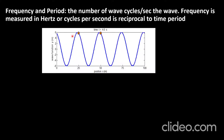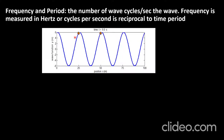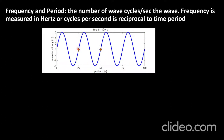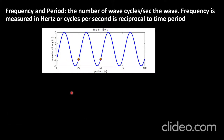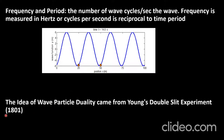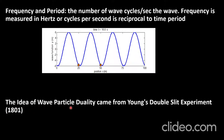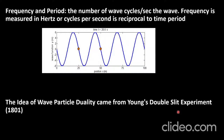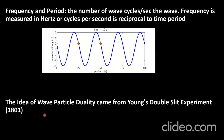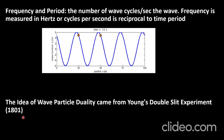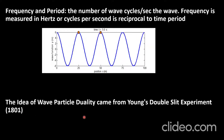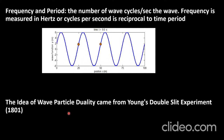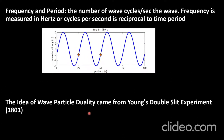Frequency is the number of cycles passing through a certain point per second. The idea of wave-particle duality comes from Young's double-slit experiment, which was performed in 1801. This was the first experiment performed to confirm the wave-particle duality.